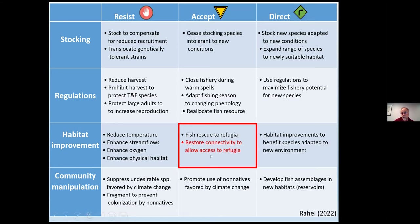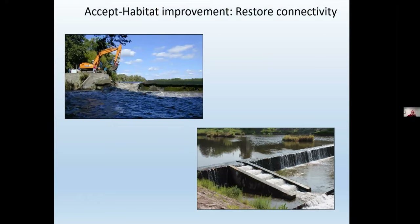I'm going to start with habitat improvements that fall under the accept strategy — we accept that the environment has changed, but one thing we might be able to do is restore connectivity. Think of a stream system fragmented by dams and roads, allowing access to refugia during heat waves or when the stream dries up, and then allowing recolonization. Restoring connectivity is a major emphasis of stream management today — getting rid of barriers, taking down old dams, putting in fish ladders. However, this also means undesirable species are now going to be able to move through the environment.